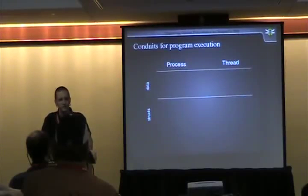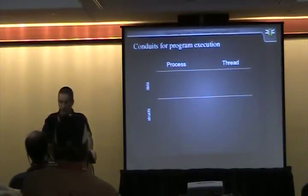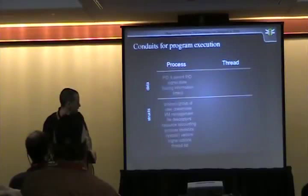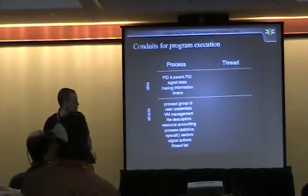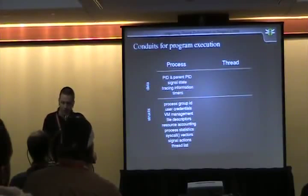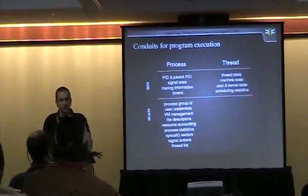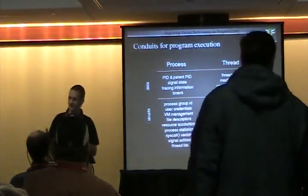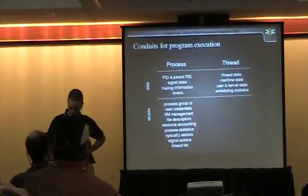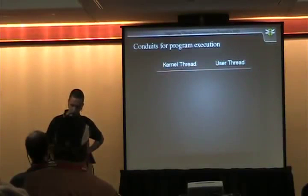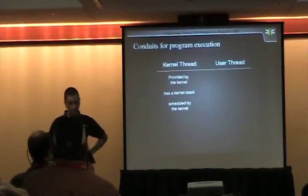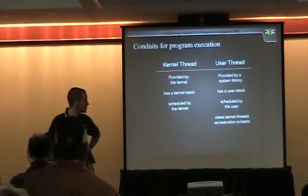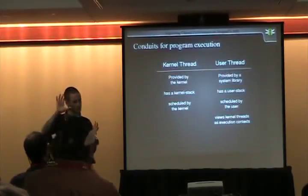The main conduits for program execution are the process and the thread. The process encapsulates a program and is quite large — it tracks file descriptors, user credentials, and the ID of the running program. A thread is a conduit that allows a program to split itself up within itself. These manifest in two ways: kernel threads and user threads, where the user thread sees the kernel thread as an execution context.